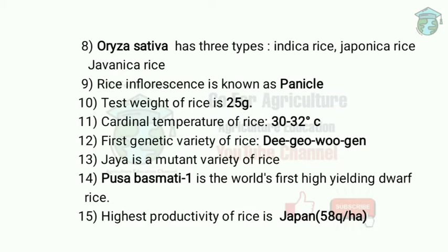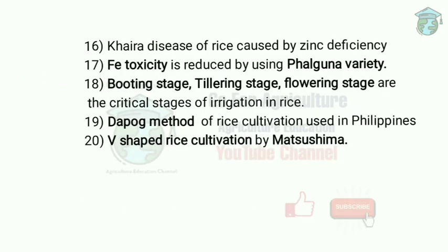Highest productivity of rice is shown in Japan at 58 quintals per hectare, while average productivity of rice in India is 18.5 quintals per hectare. Khaira disease of rice is caused by zinc deficiency. The solution is to apply zinc sulfate at the rate of 40 kg per hectare.